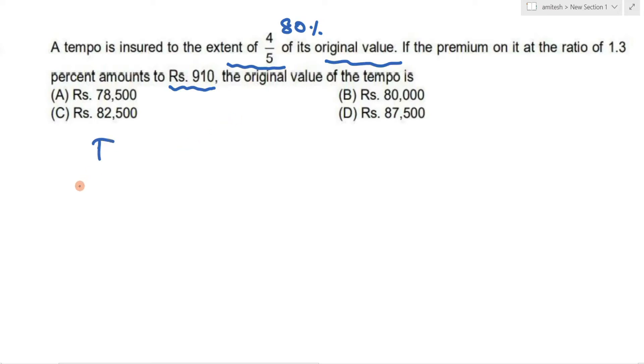T is the cost price, so insured to the extent of 4/5th of its original value. Premium is the total value of the amount which you pay at 1.3%, which is equal to 910.